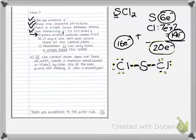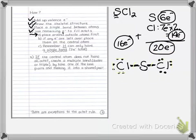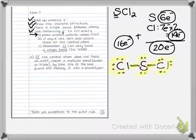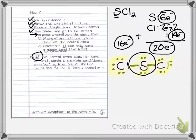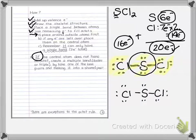After placing lone pairs on both chlorines to give each eight electrons, I've used 16 electrons total. I still have four left, so following rule 4B, I place those remaining four electrons on the central sulfur atom as two lone pairs. Counting all electrons — 20 total — confirms we've used exactly the right number, and sulfur has eight electrons. The Lewis structure for SCl2 is complete.